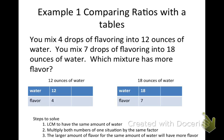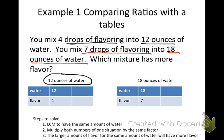Example 1: Comparing ratios with tables. You're mixing four drops of flavoring in twelve ounces of water. In the other mixture, you have seven drops of flavoring in eighteen ounces of water. I've made charts to make it easier — one chart shows the amount of water and the amount of flavor for the twelve-ounce mixture, and the other chart shows the same for the eighteen-ounce mixture. The question is: which one has a stronger flavor?